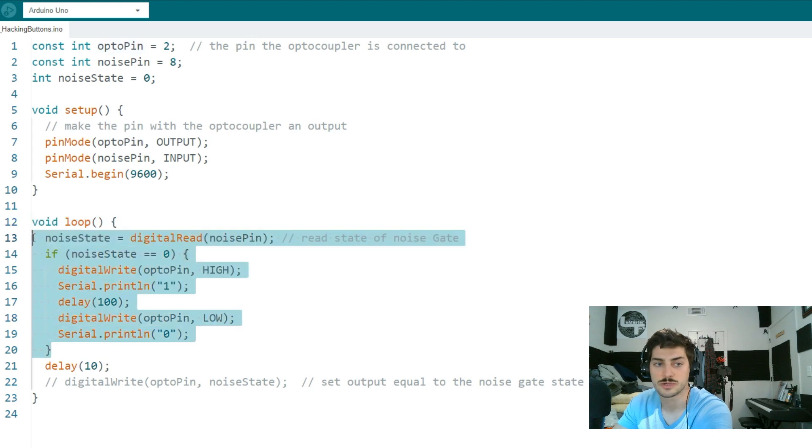In the loop section of the build, which is going to run repeatedly over and over until we stop it or power it down, I'm just going to start by reading the noise pin. These noise gates that I got in particular, there will be a link to them, they're like five for five dollars in the description.